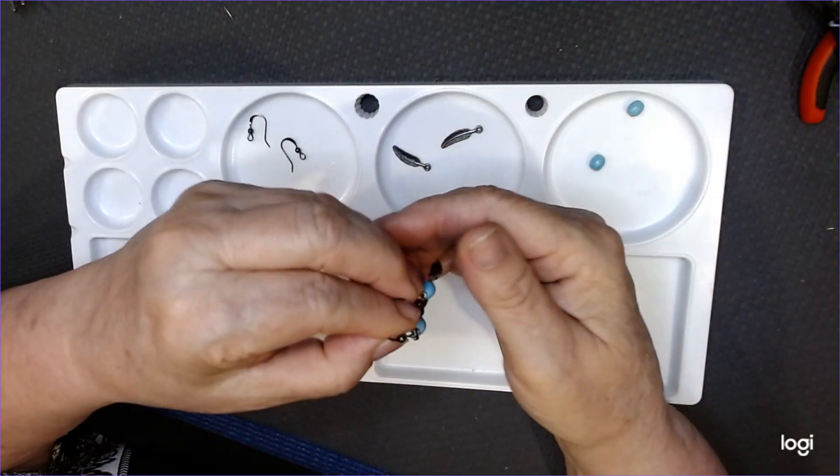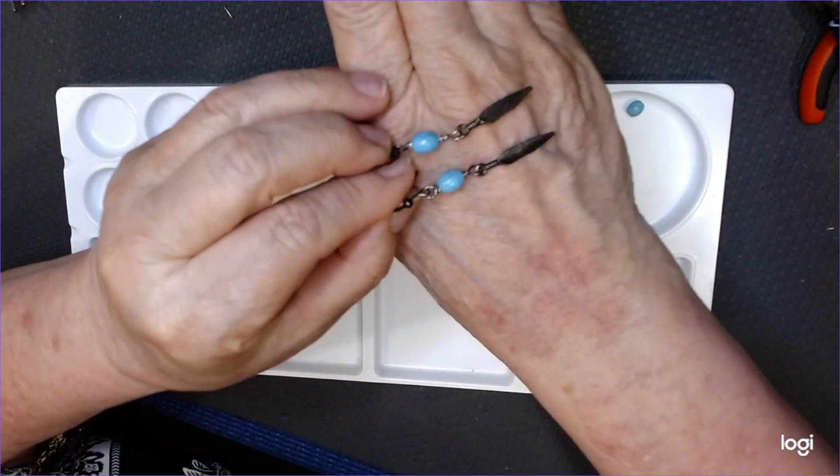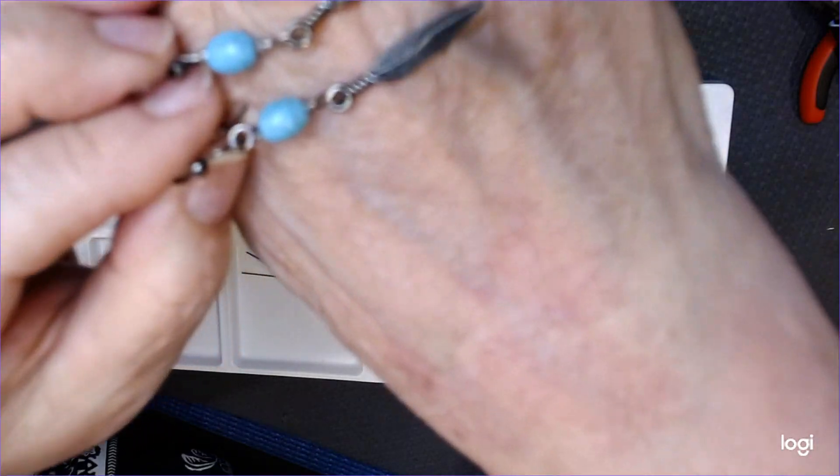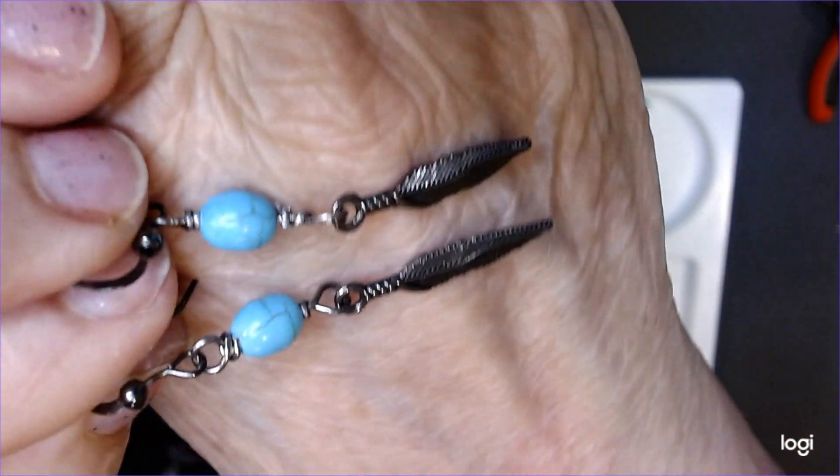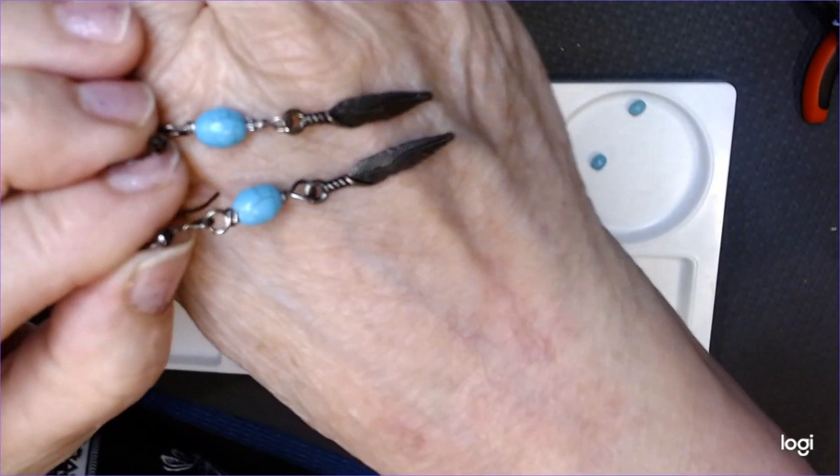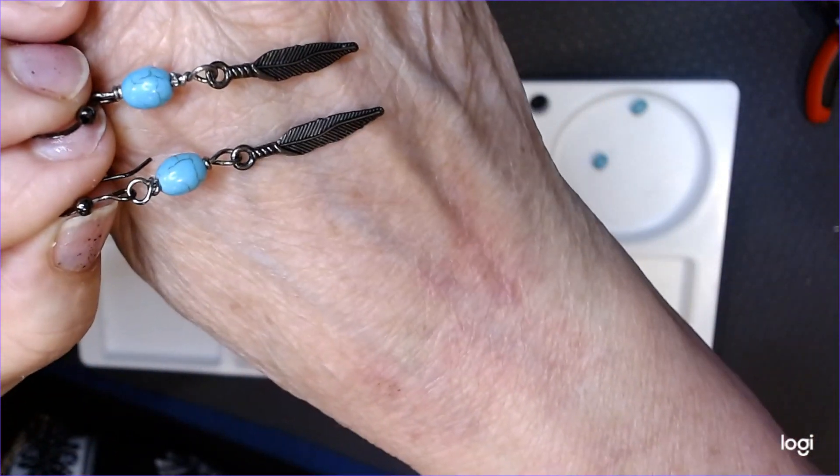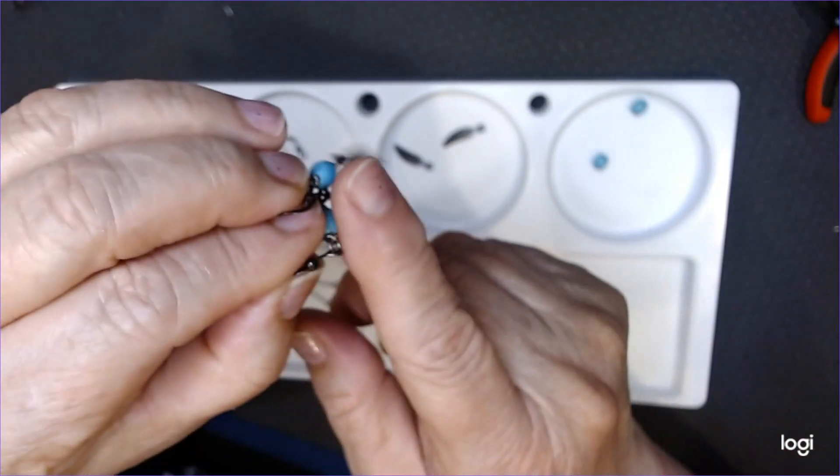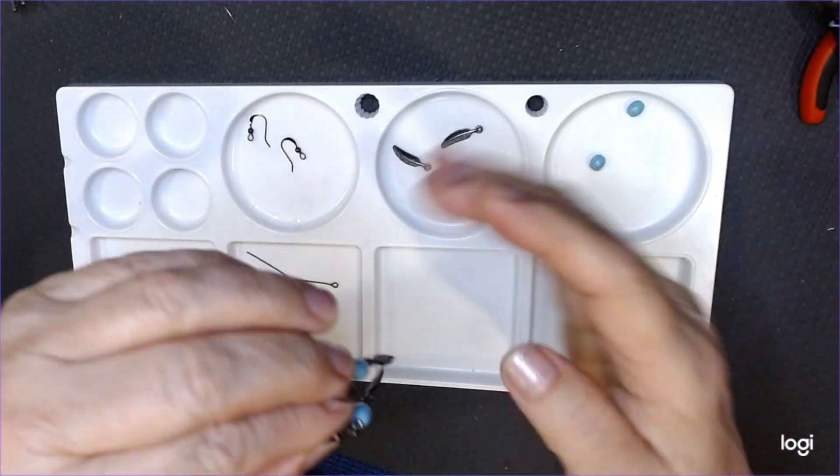Hi everybody, I think you're going to like this. This is a real easy pair of earrings to make. It's turquoise with the feathers, and I think turquoise goes really well with the feathers. So that's what we're going to make, and you're going to find out these are really easy to make.